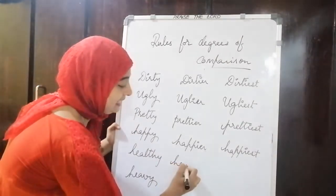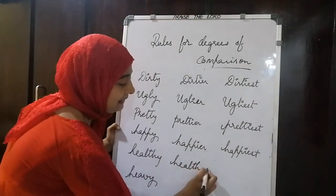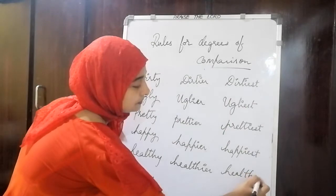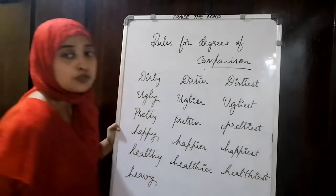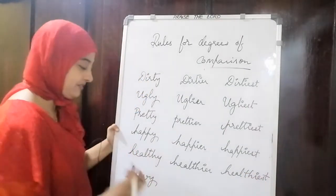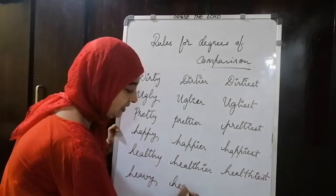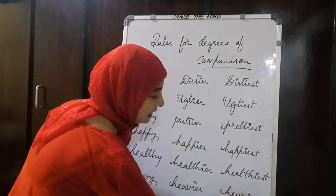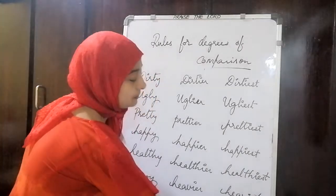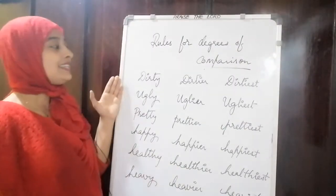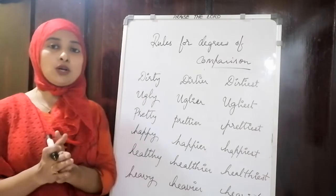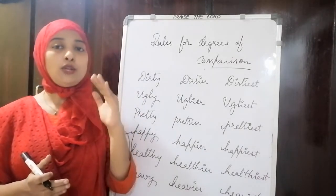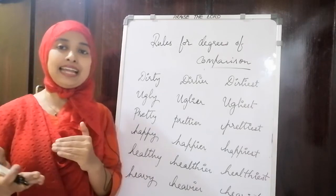Don't get confused with the spellings. 'Healthy' becomes 'healthier' and 'healthiest'; 'heavy' becomes 'heavier' and 'heaviest'. Whenever a word ends with a consonant Y, drop the Y and add I in its place.